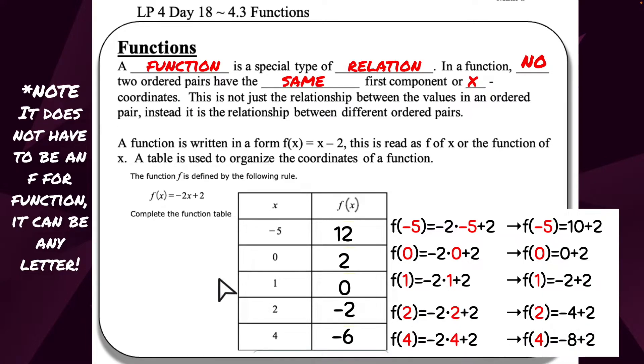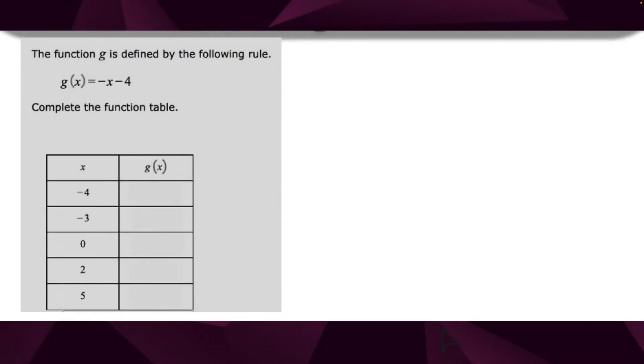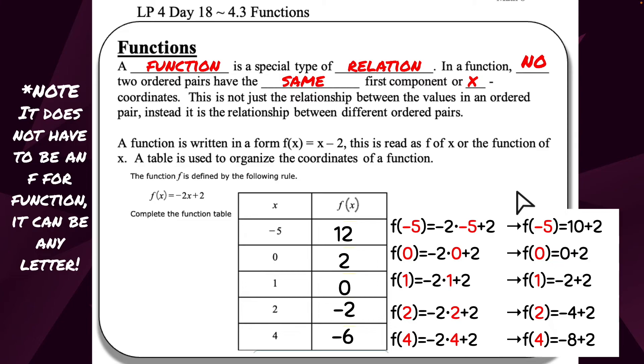If you notice, everything is staying the same in this equation except for that variable. The only thing changing is that x. I'm inserting a new x. That's an input. The output is this column. What do I get from putting in negative 5, 0, 1, 2, or 4? That's why we call this the input and the output. That's exactly what they are.